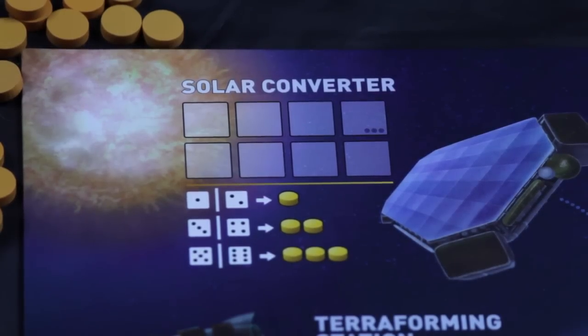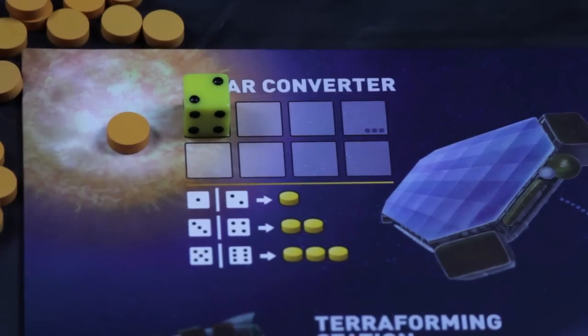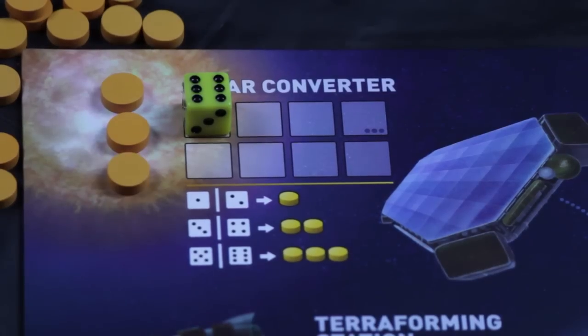First, we have the solar converter. Energy tokens are necessary to build colonies and ships, or activate alien tech cards, so it's a good idea to always have some energy on hand. Any die roll will work at the solar converter. As clearly shown on the board, a 1 or a 2 will get you 1 energy, a 3 or 4 will get you 2, and a 5 or 6 will get you 3. There's a lot of space here, so it is difficult to block anyone, and higher numbers are simply better than low numbers, so the space itself is not that interesting.